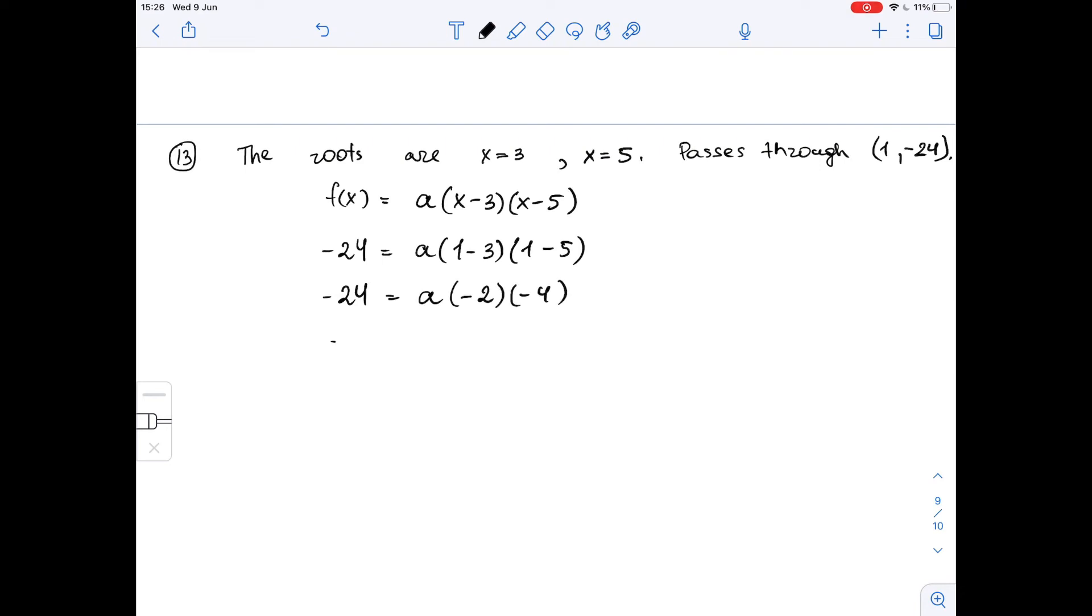That means that negative 24 is equal to 8a. So we get that a is equal to negative 24 over 8, which is negative 3.